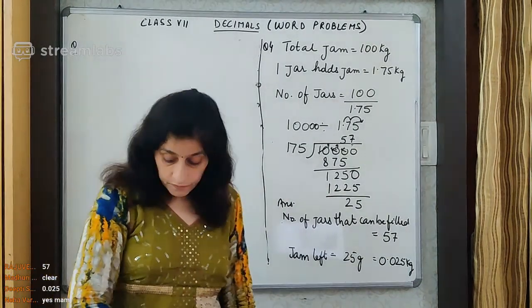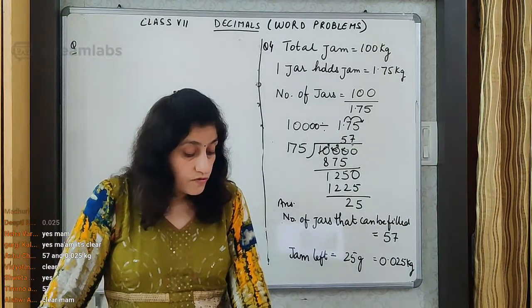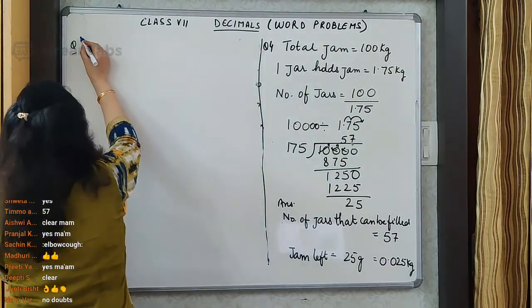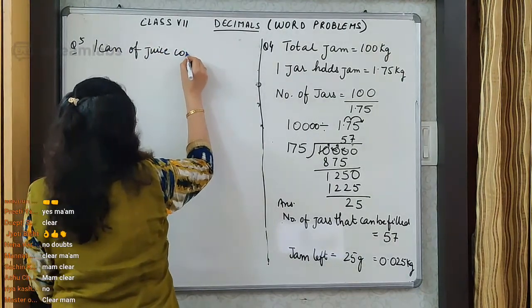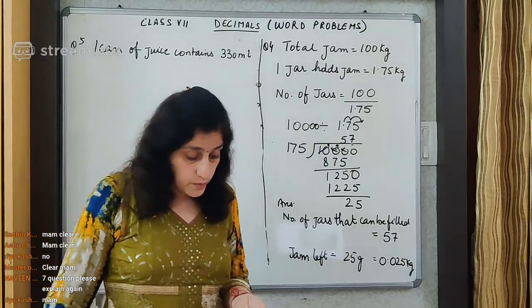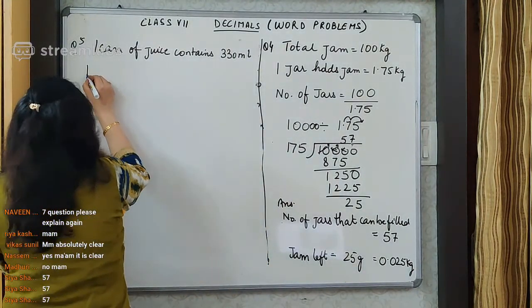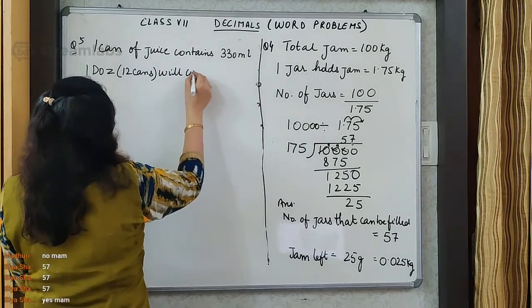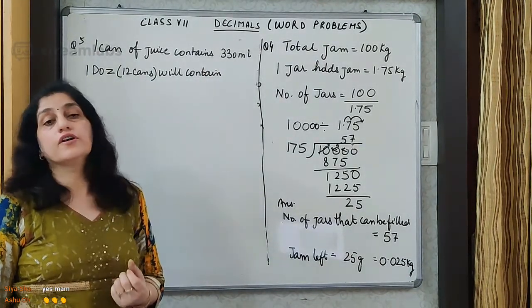Now we move on to the next question. One can of juice contains 330 milliliter of juice. How many liters of juice is there in a pack of a dozen cans? Dozen means 12 cans. I know that one can contains 330 milliliter — then 12 cans will contain. We have to multiply or divide?